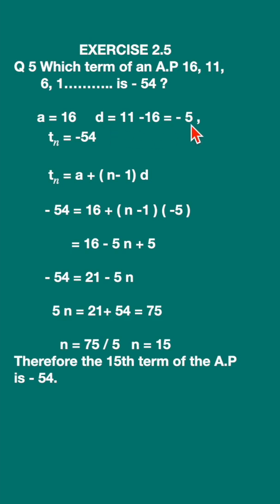They have given t_n as -54, and we have to find the value of n. Write down the formula: t_n = a + (n - 1)d.